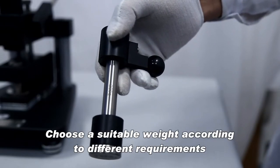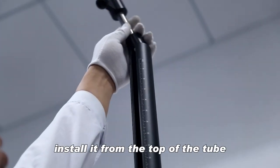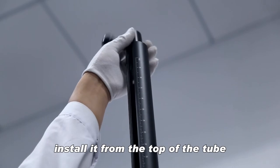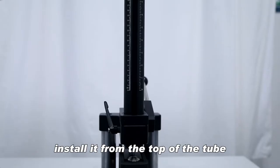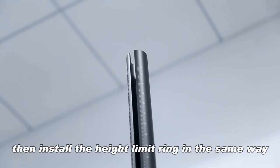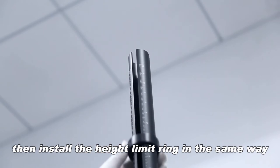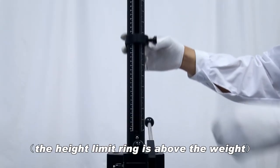Choose a suitable weight according to different requirements and install it from the top of the tube. Then install the height limit ring in the same way. The height limit ring is above the weight.